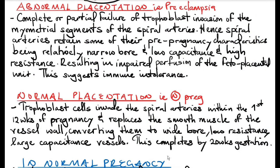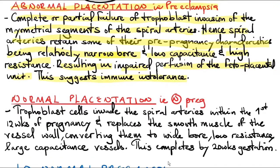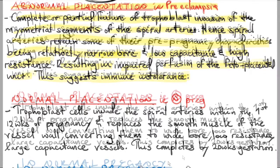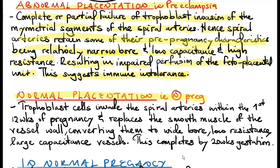To put it in words, abnormal placentation occurs in preeclampsia: there is complete or partial failure of trophoblast invasion of the myometrial segments of the spiral arteries, so the spiral arteries retain their pre-pregnancy characteristics — relatively narrow bore, low capacitance, and high resistance — resulting in impaired perfusion of the fetal placenta unit. In normal pregnancy, trophoblast cells invade the spiral arteries within the first 12 weeks and replace the smooth muscle of the vessel wall, converting them to wide bore, low resistance, large capacitance vessels, which is completed by 20 weeks gestation.